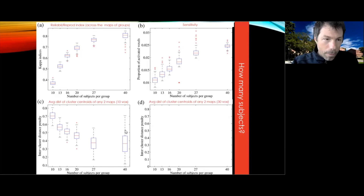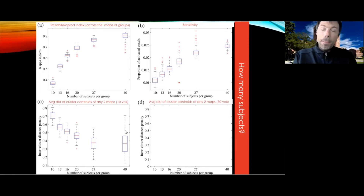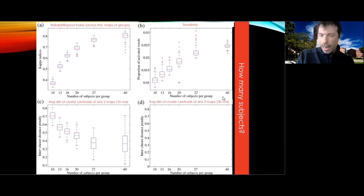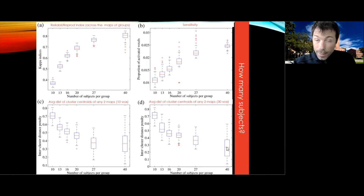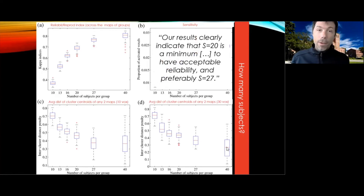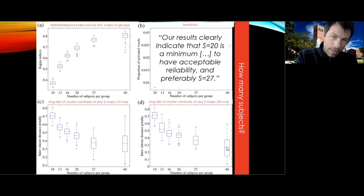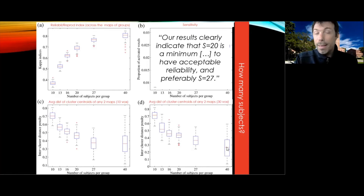If you require larger clusters — say 30 voxels versus 10 voxels — you get essentially the same pattern, perhaps with a more pronounced decrease from 27 to 40. Out of all these analyses, Thirion and colleagues conclude that their results clearly indicate a sample size of 20 is a minimum to have acceptable reliability, with 27 preferred.